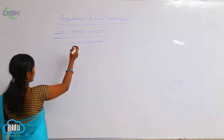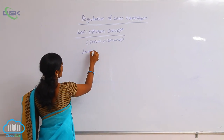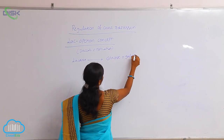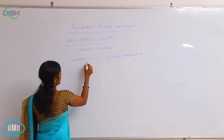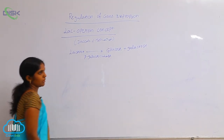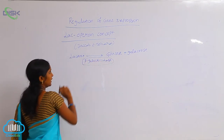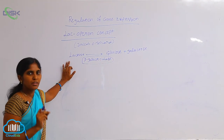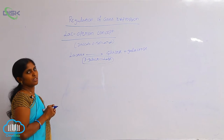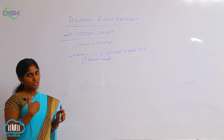In the lac operon regulation of E. coli, the energy source is lactose, which is catalyzed into glucose and galactose. The working enzyme is beta-galactosidase. If beta-galactosidase is absent, lactose metabolism does not happen and energy is not released. An operon is a DNA segment involved in transcription. The lac operon of E. coli has several components.